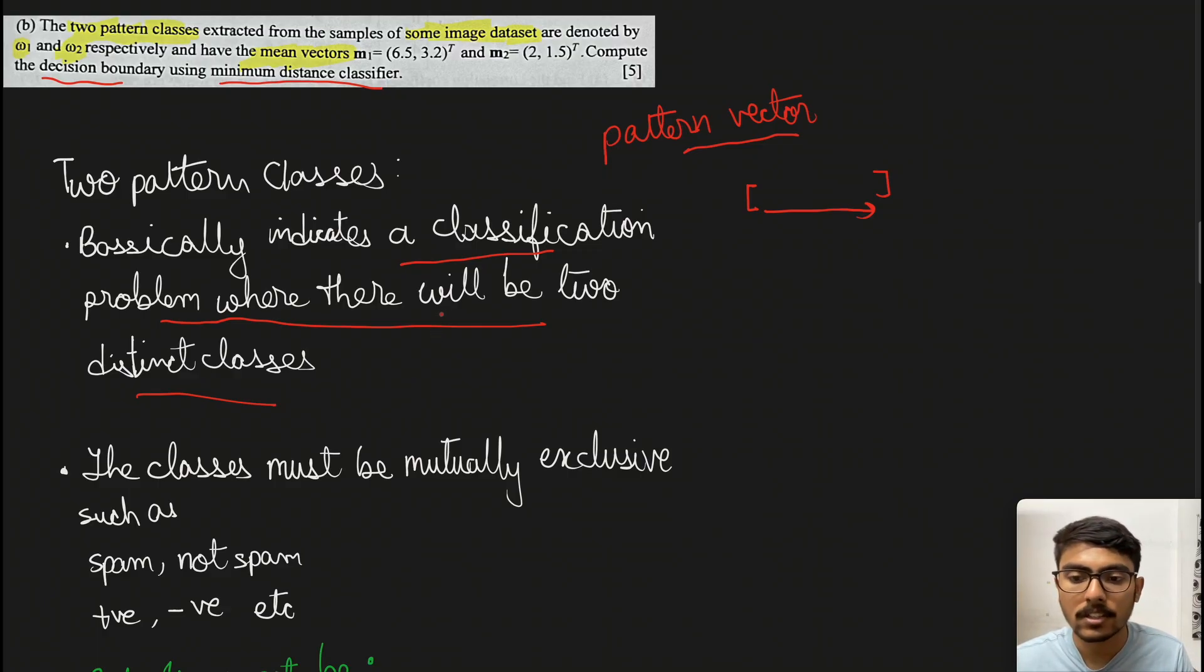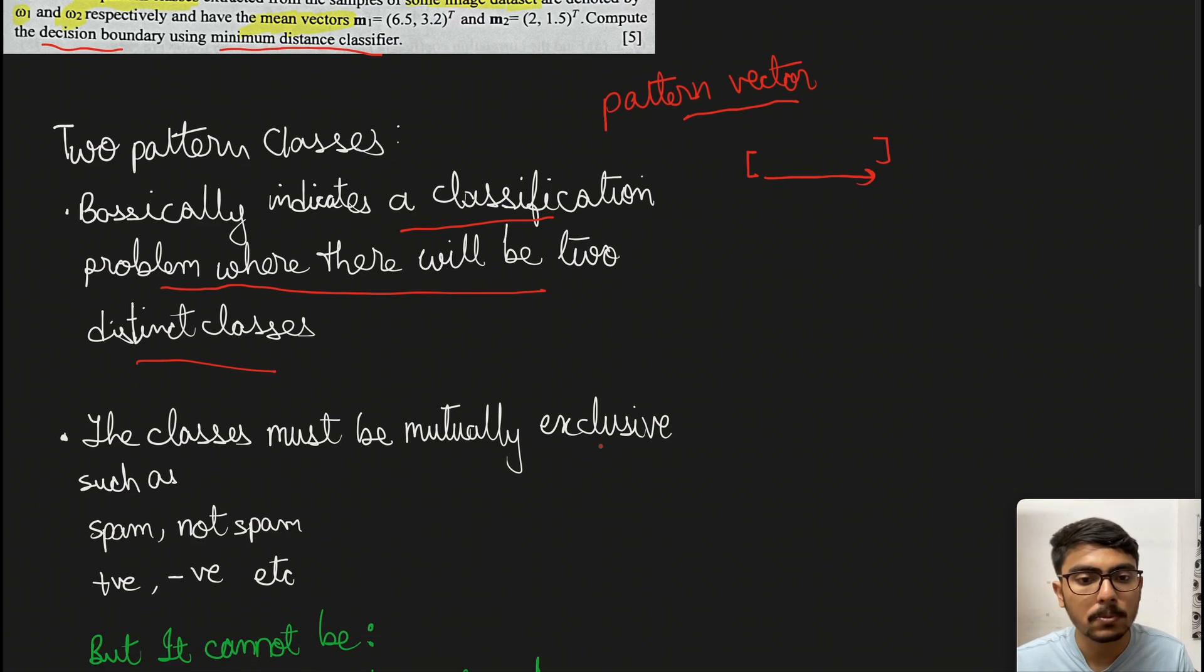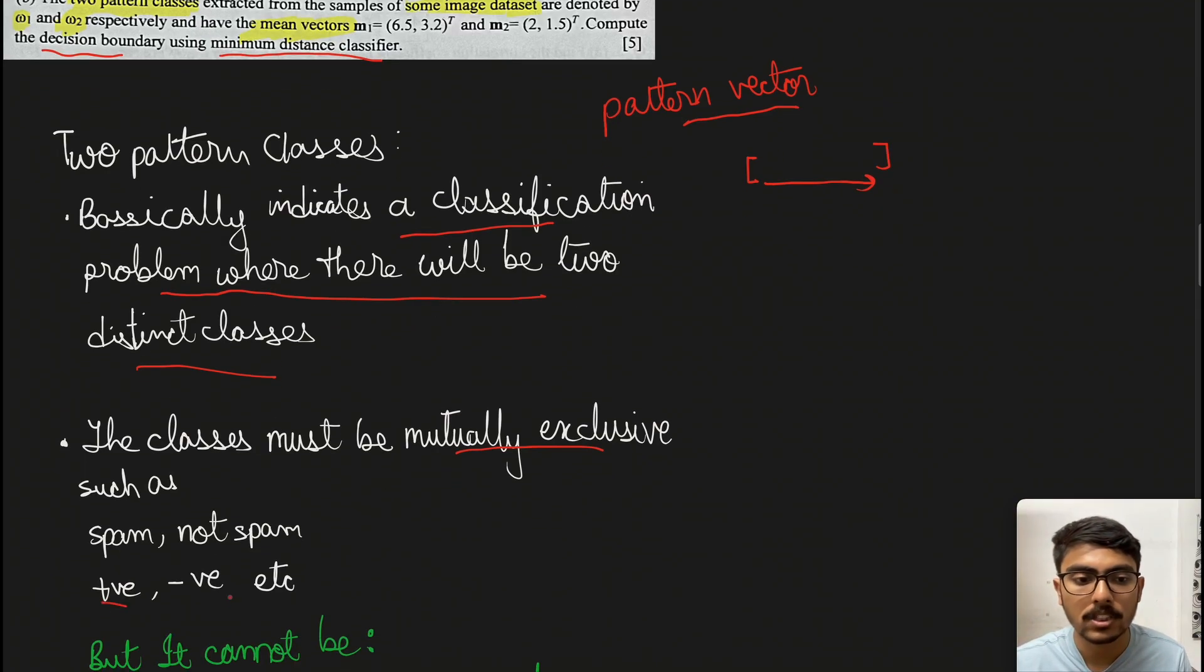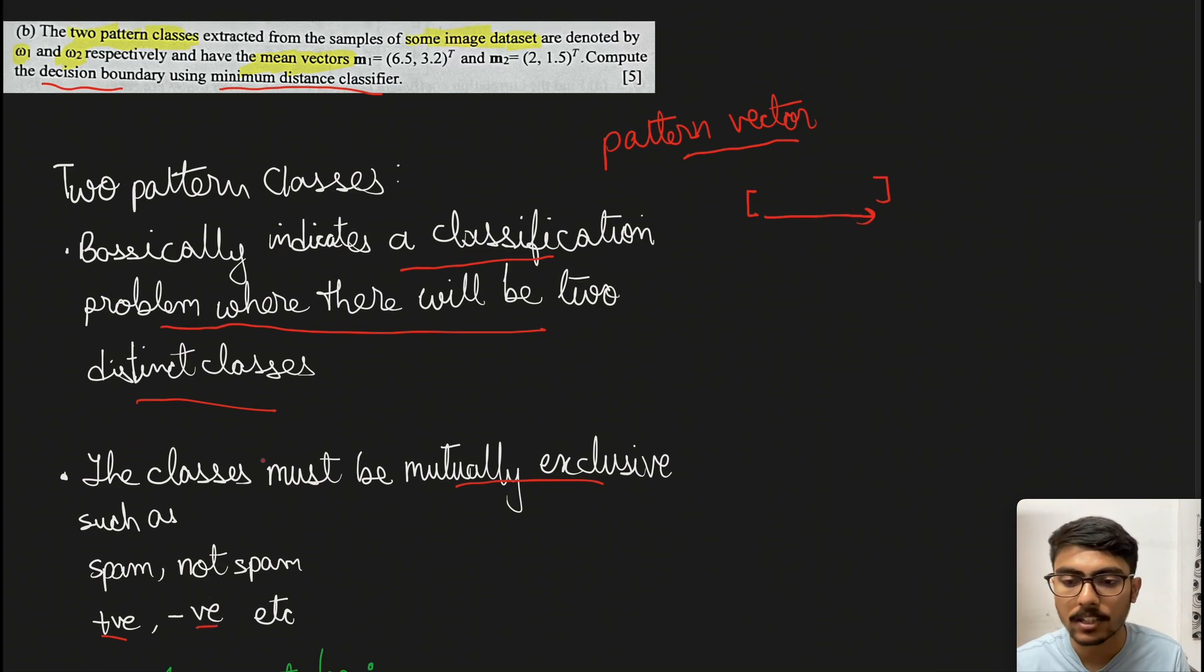The second thing is the classes must be mutually exclusive. In machine learning, we classify emails into spam and not spam - those are clearly mutually exclusive. One does not belong to another class in any sense. Similarly, positive or negative - they don't overlap, so they're mutually exclusive.